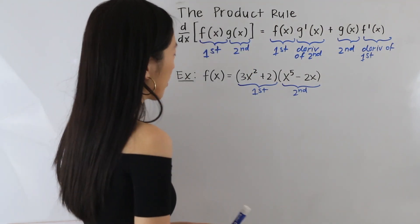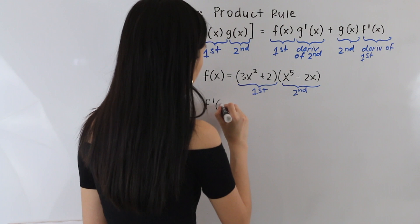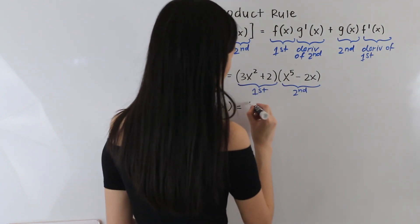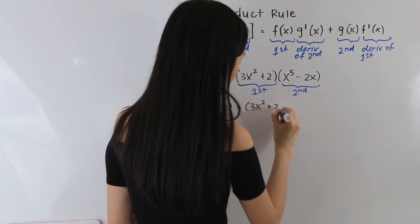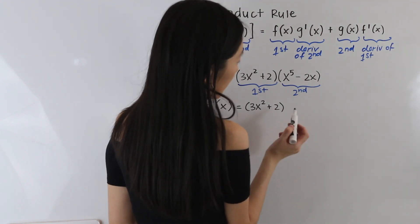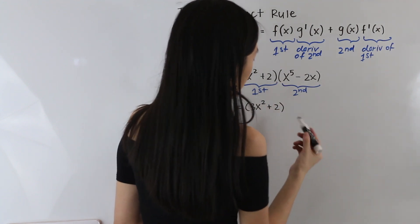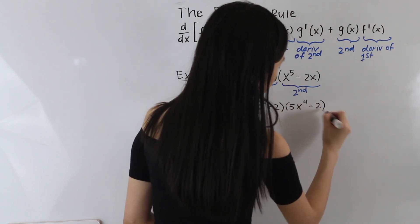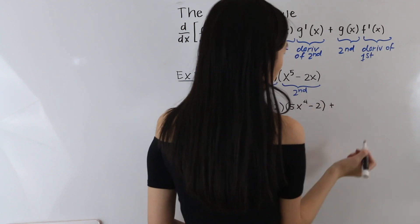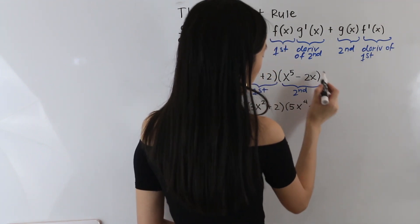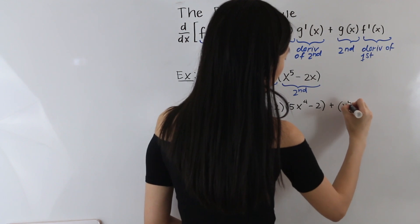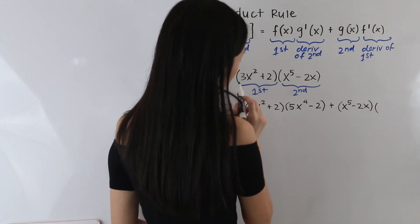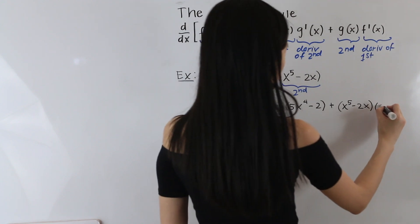Let's go ahead and take the derivative of our function. We have f prime of x is equal to the first function, so 3x squared plus 2, times the derivative of the second function. The derivative of x to the fifth minus 2x gives us 5x to the fourth minus 2, and then plus the second function, so x to the fifth minus 2x, times the derivative of the first, which is equal to 6x.